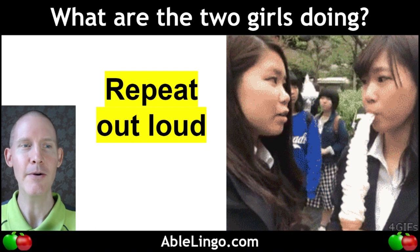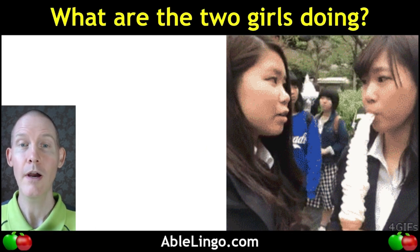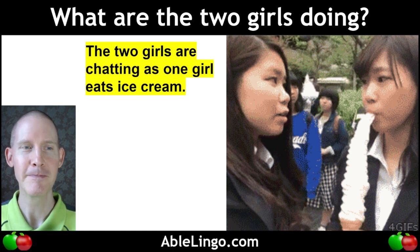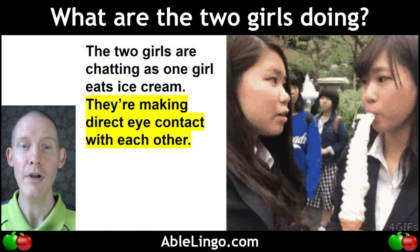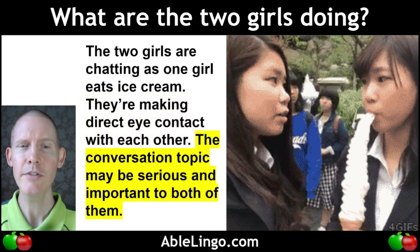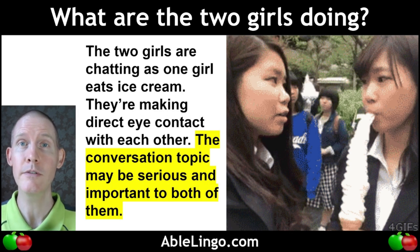Repeat out loud. What are the two girls doing? The two girls are chatting as one girl eats ice cream. They're making direct eye contact with each other. The conversation topic may be serious and important to both of them.